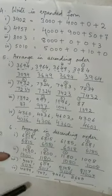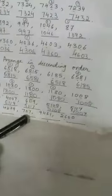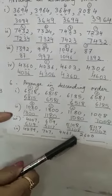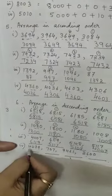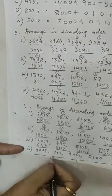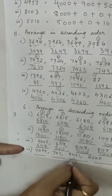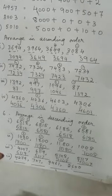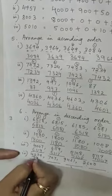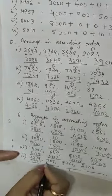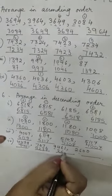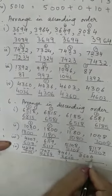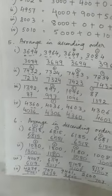Look at the fourth example: 4279, 707, 9461, 2600. This is very easy to understand. Here 4 is in the thousands place, 707 is only a 3-digit number, 9 is in the thousands place, and 2 is in the thousands place. So 9461 is the greatest, then comes 4279, then 2600, and lastly the 3-digit number 707. Clear, students?